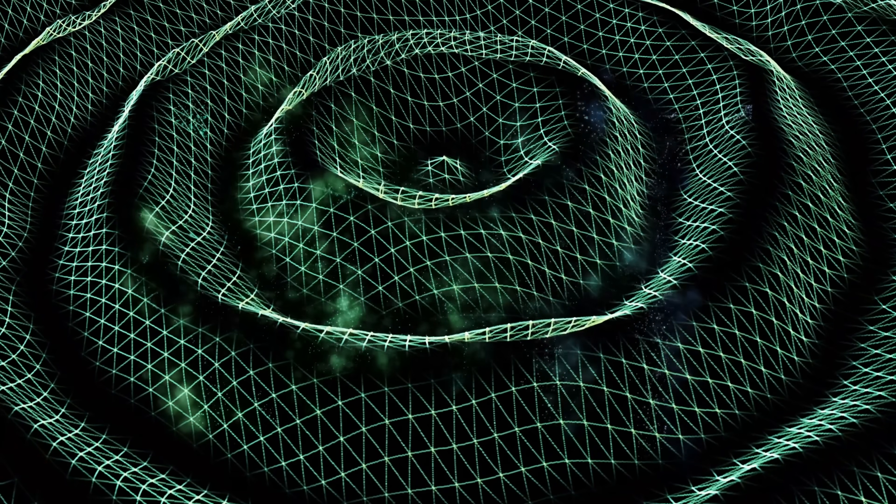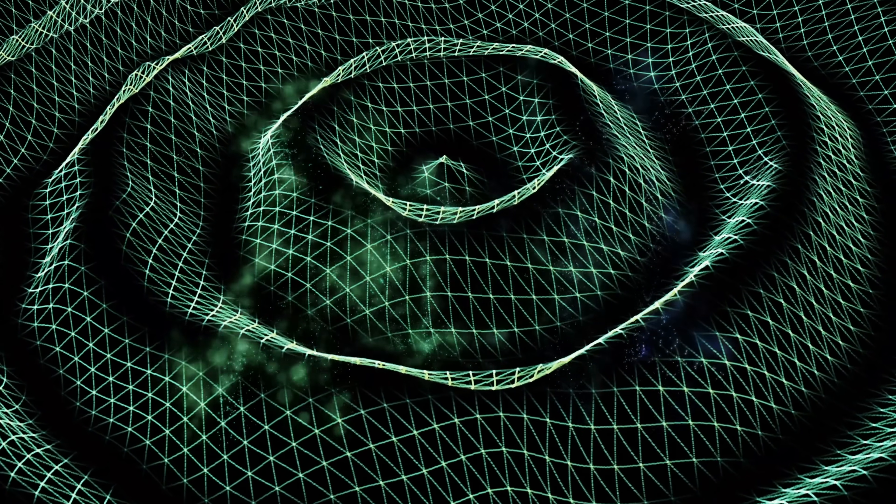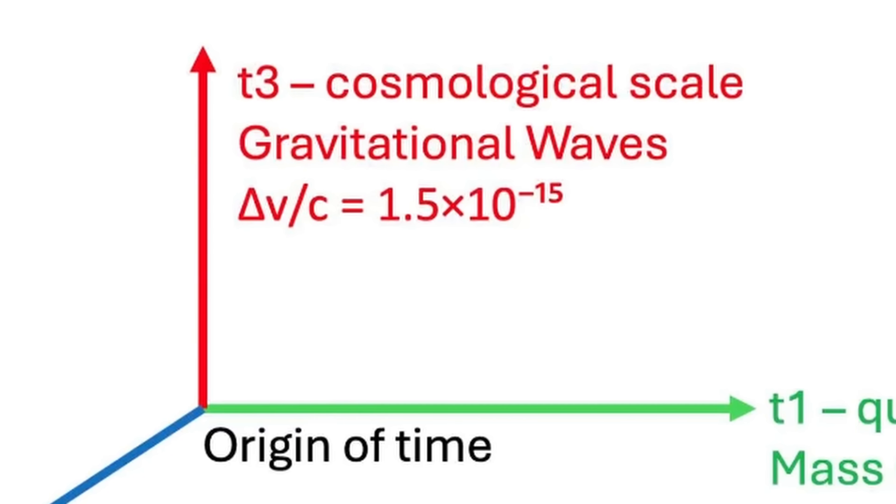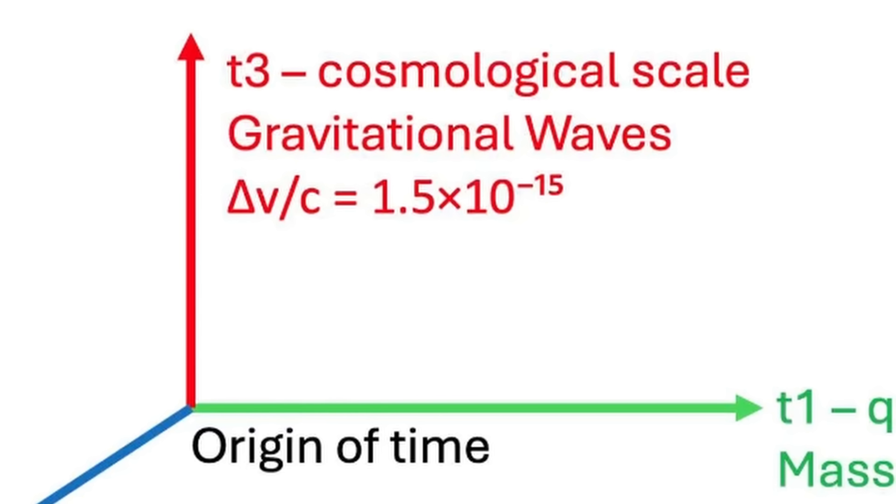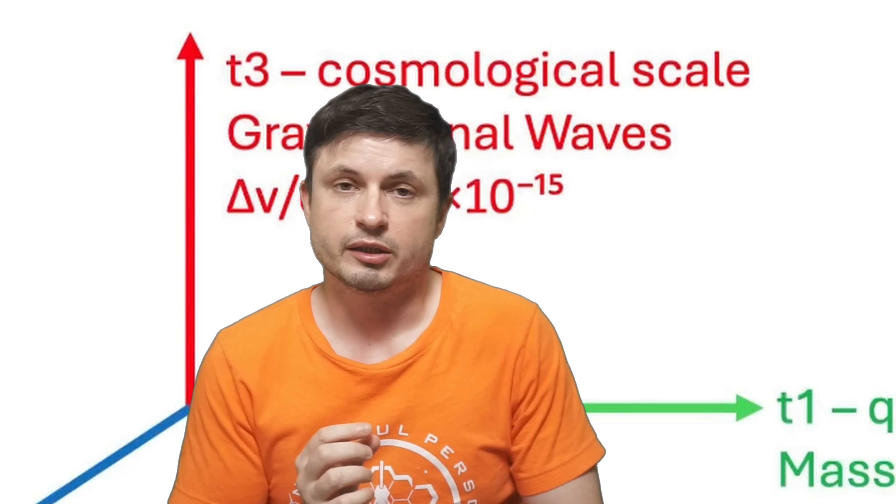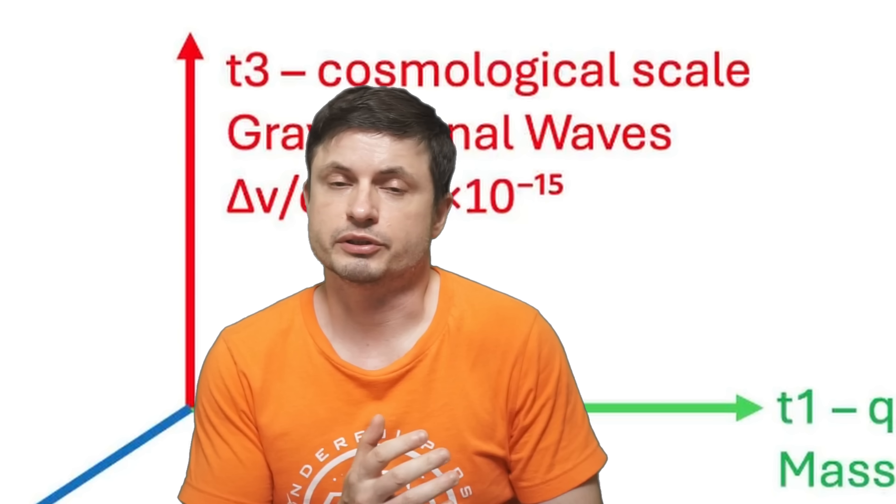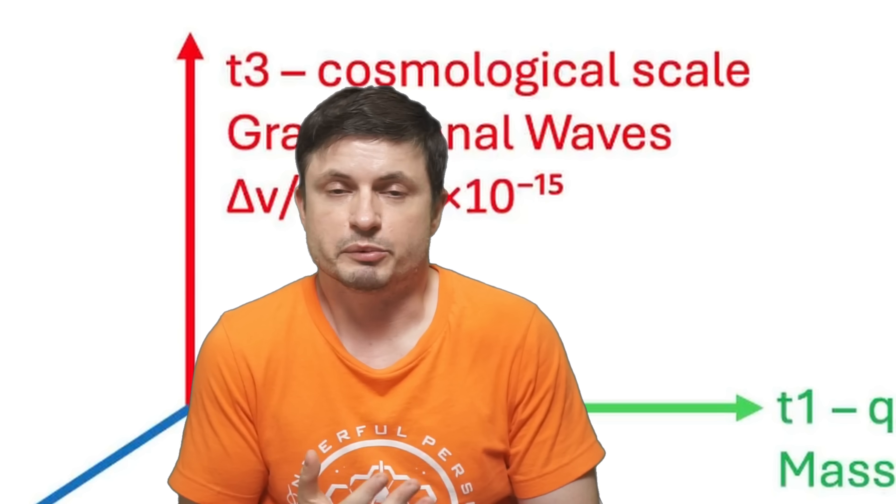For example, apart from the particle masses, it also actually predicts the speed of gravitational waves. And so according to this proposition, gravitational waves should actually have a slightly slower speed than the speed of light. It's a very very small difference, but if we're talking about distances in billions of light years, it does become testable.